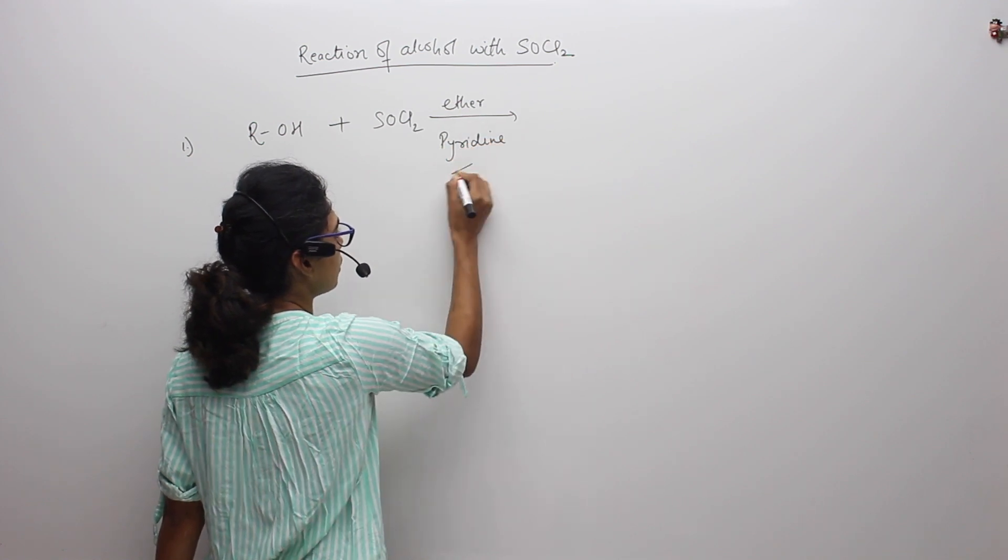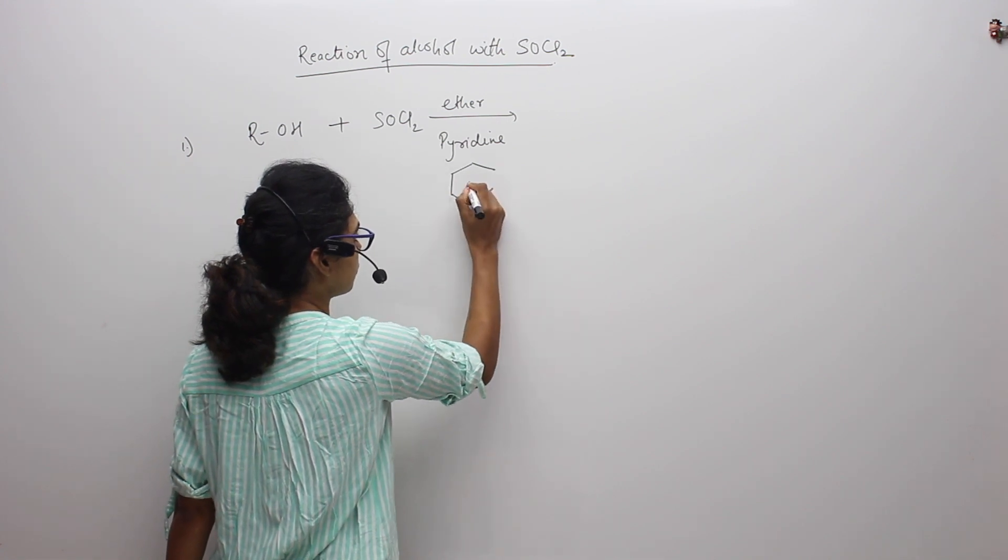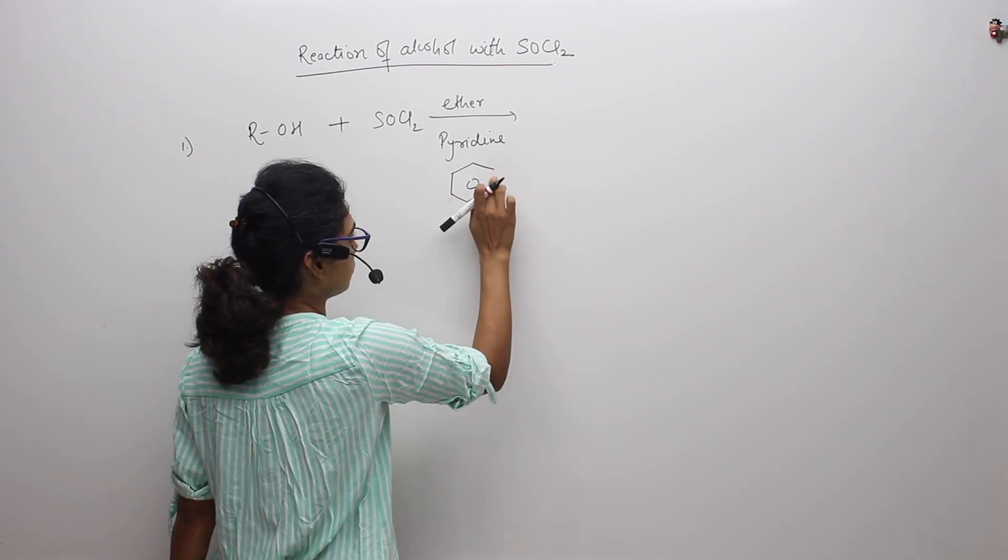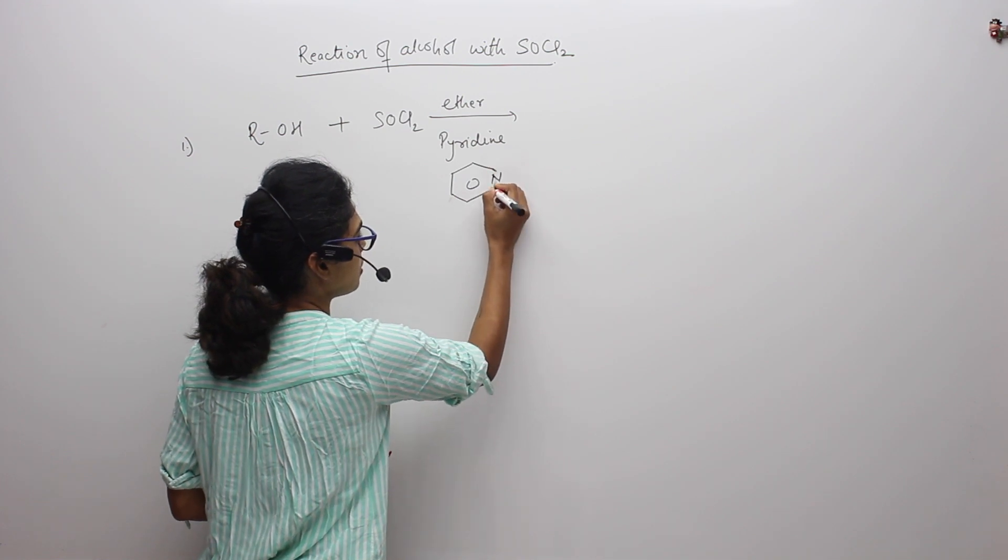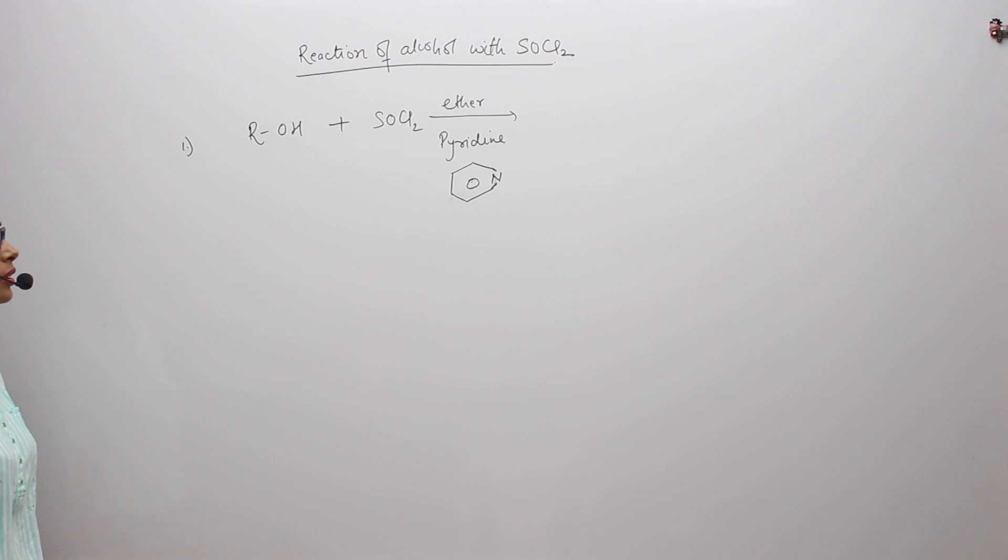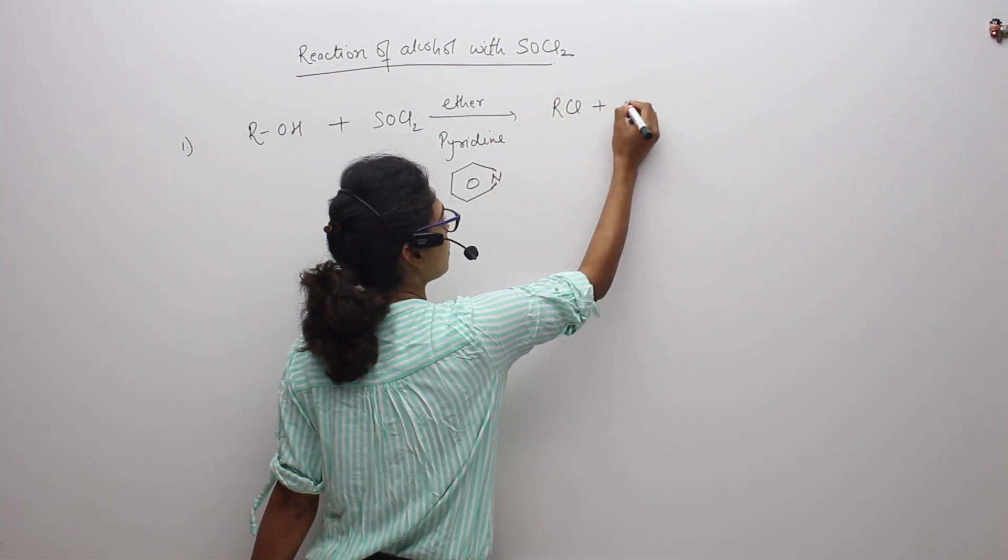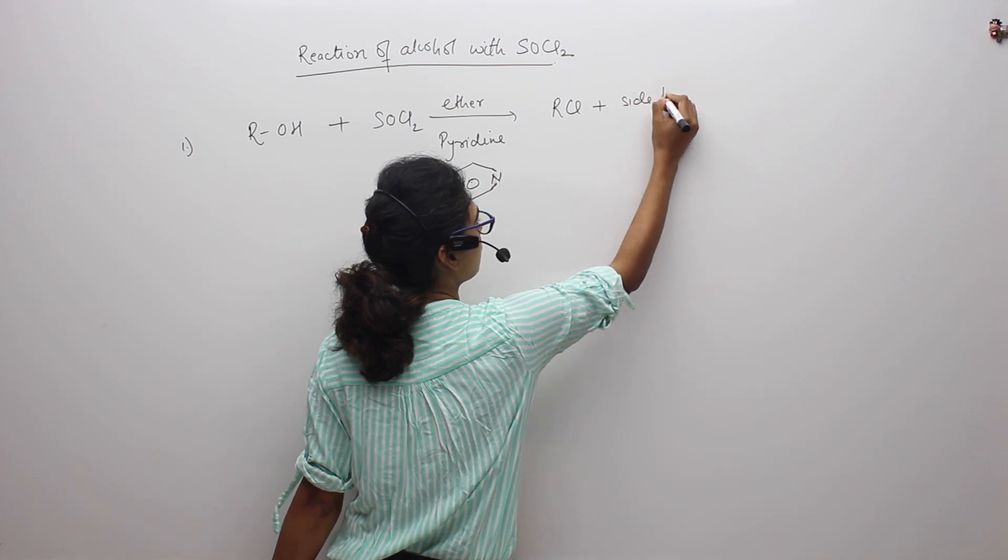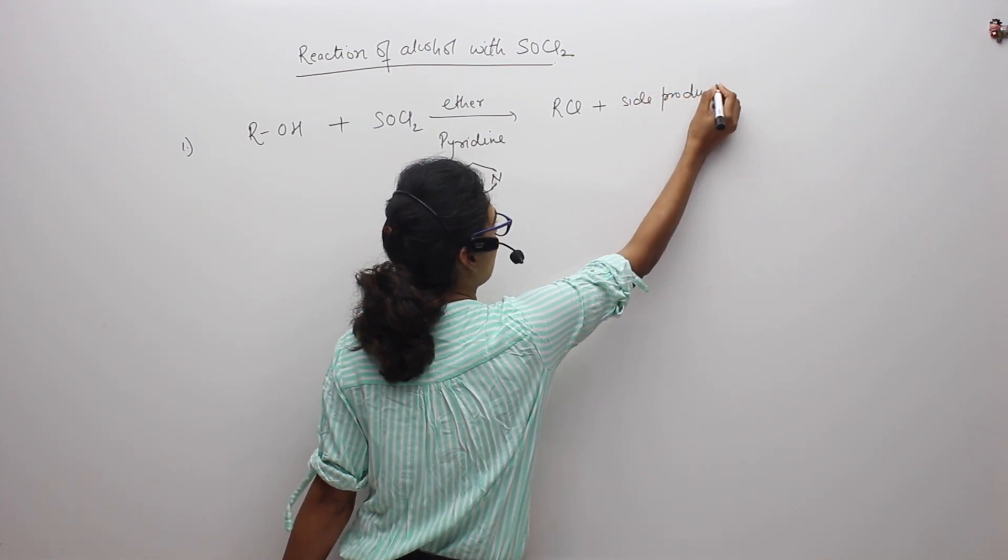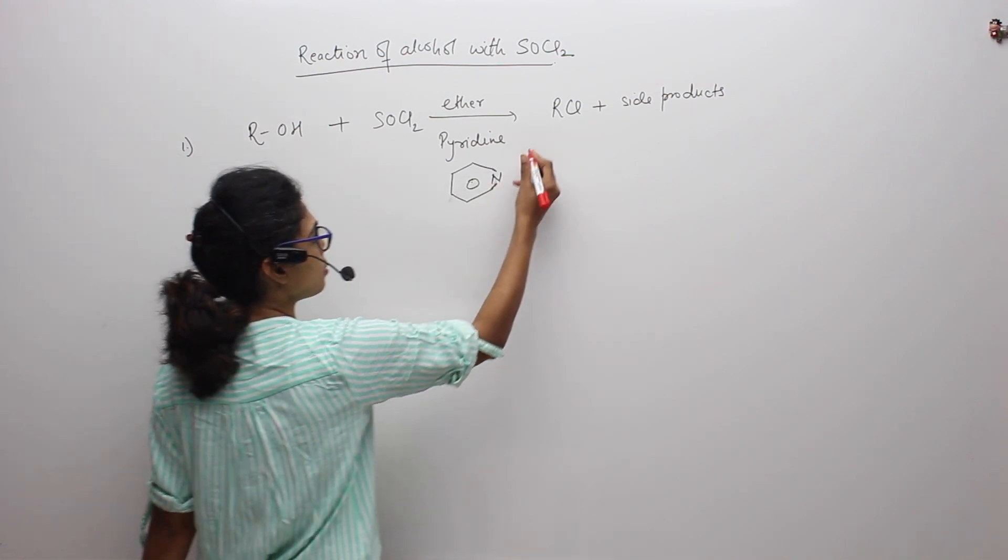First is ROH reacting with SOCl2 in the presence of ether and pyridine. What is pyridine? This is the structure of pyridine. So in this reaction, we will get RCl and other side products. And this reaction will go through SN2 mechanism.